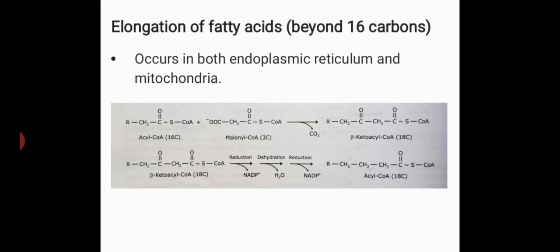Fatty acids longer than 16 carbons are formed in endoplasmic reticulum or mitochondria by elongation reactions. The most active elongation system is found in endoplasmic reticulum. It adds malonyl coenzyme A into palmitate in a manner similar to the action of fatty acid synthase, except that coenzyme A is involved rather than ACP. Stearic acid is a common product of this elongation system. It is an 18-carbon atoms long fatty acid.